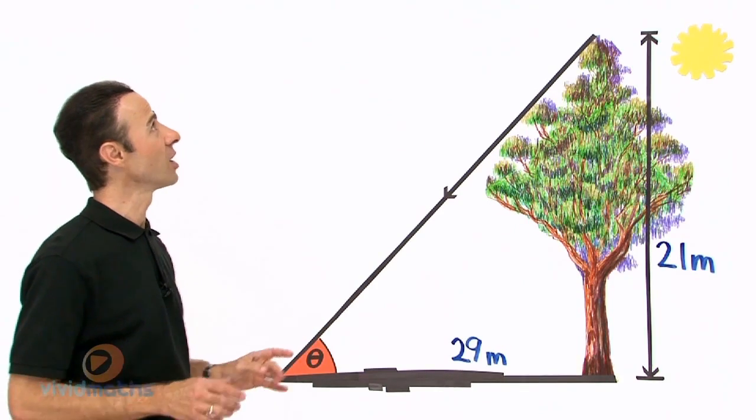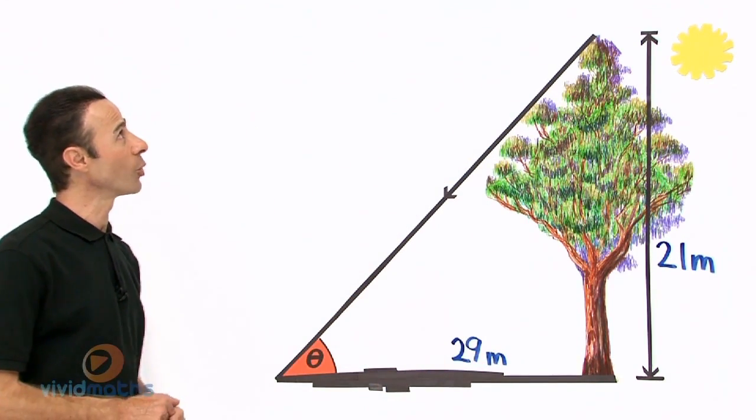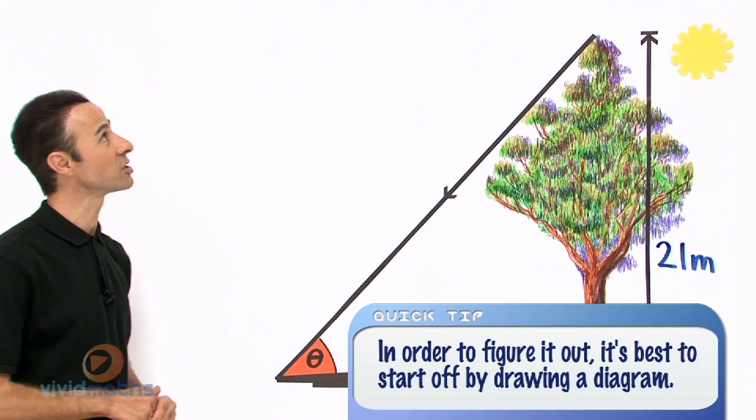We will read it together. It is a tree 21 meters tall, as I said here, it has cast a shadow 29 meters long. That is a massive shadow there, that is beautiful there on a hot summer's day.